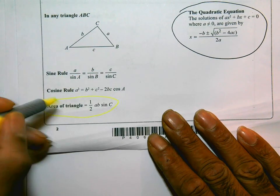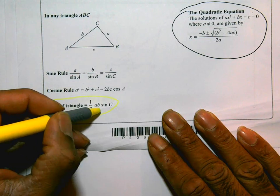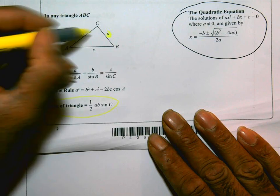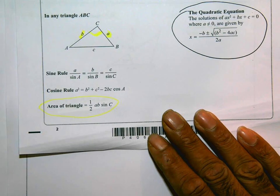The area of this triangle is a half AB sine C. A and B are sides on either side of an angle C. So I'm going to use that formula in this question.